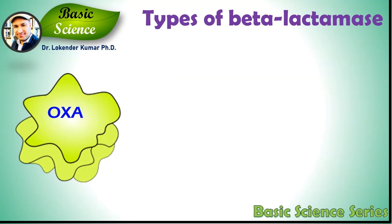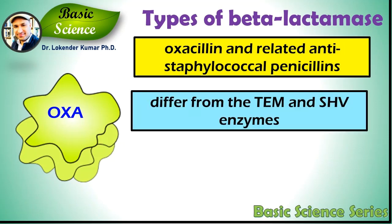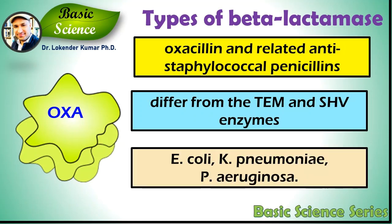OXA beta-lactamases were long recognized as a less common but also plasmid-mediated beta-lactamase variety that could hydrolyze oxacillin and related antistaphylococcal penicillins. These beta-lactamases differ from TEM and SHV enzymes in that they belong to molecular class D. They have been found in E. coli, Klebsiella pneumoniae, and other Enterobacteriaceae, and OXA types have been found mainly in Pseudomonas aeruginosa.